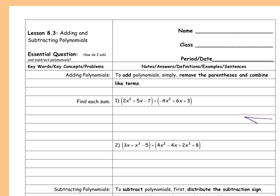So we're going to remove the parentheses first. This becomes 2x squared plus 5x minus 7, minus 4x squared plus 6x plus 3. Then we're going to combine like terms. Remember that like terms are the same variable raised to the same exponent. So 2x squared and negative 4x squared are like terms, 5x and 6x are like terms, and negative 7 and 3 are like terms.